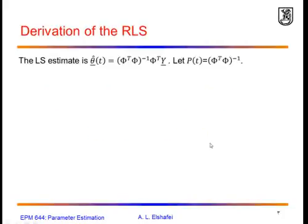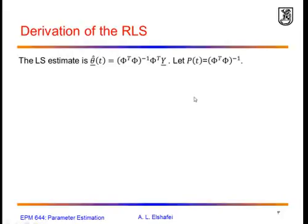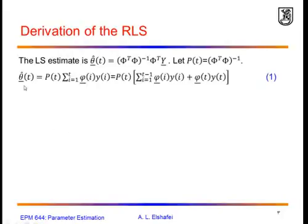Let us recall the basic expression of the least squares estimate. The parameter estimate theta-hat equals phi-transpose phi inverse times phi-transpose y. I am going to define a matrix P which is phi-transpose phi inverse, and this is normally called the covariance matrix.